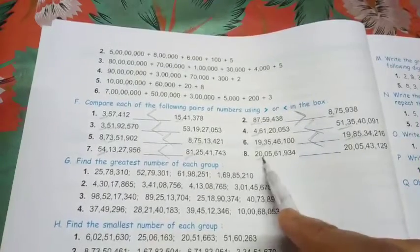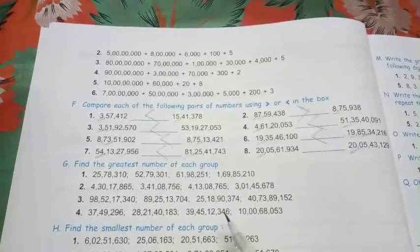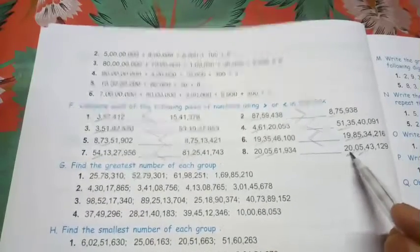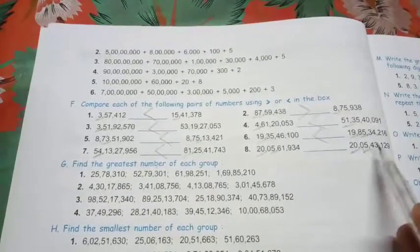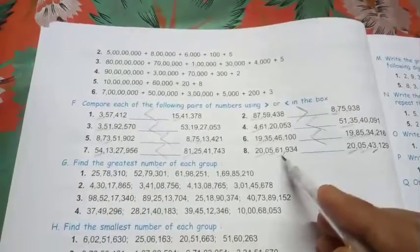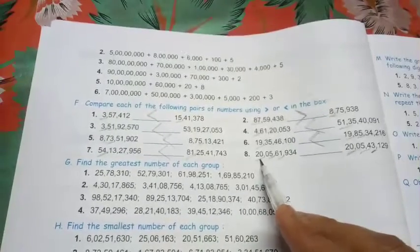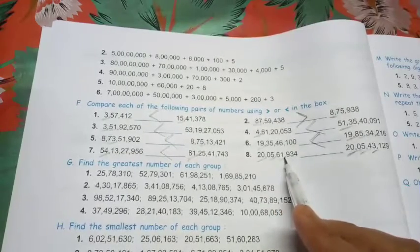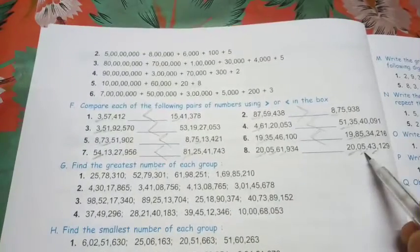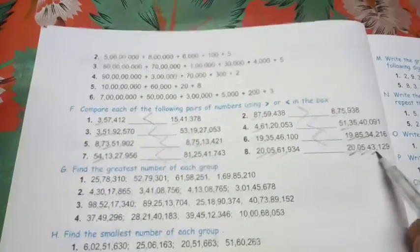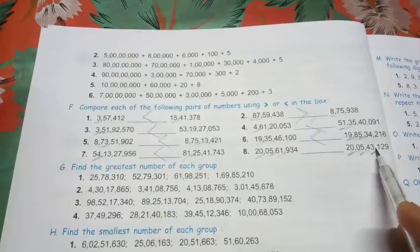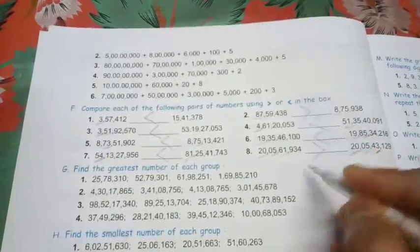In question number eight, the highest possible order is twenty crore, and the lakhs order is also the same — zero five on both sides. So we look into the thousands order: we have sixty one thousand on the left and forty three thousand on the right. The figures are twenty crore five lakh sixty one thousand versus twenty crore five lakh forty three thousand. Sixty one thousand is greater than forty three thousand, so put the greater than symbol.